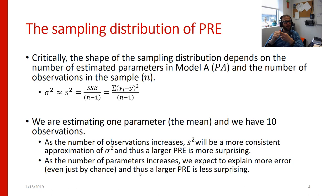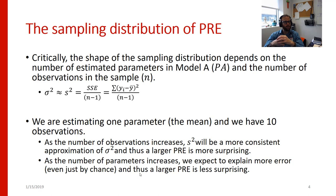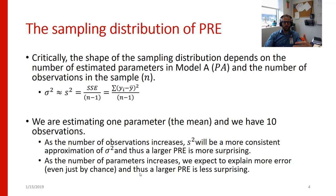These two factors — the number of parameters we're estimating in our model and the amount of data that we have — sort of work against each other when we make inferences about the proportional reduction in error. In general, the bigger our dataset, even a smaller change in PRE will be interesting. However, if we're estimating lots and lots of parameters, a small change in PRE isn't very interesting, because we expect PRE to go up for any given parameter. So if it takes 10 parameters to explain a very small amount of variance, that's not a surprising or meaningful change.